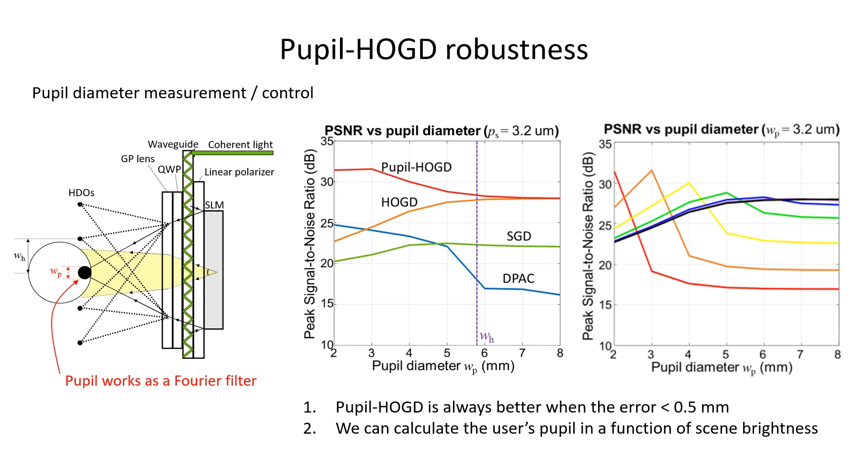Further, the pupillary light reflex is a function of the intensity of the light that falls on the retina. Therefore, we can pre-calibrate the user's pupillary light reflex and use that information to calculate the user's pupil based on the scene brightness. Especially because the pupil HOGD algorithm is quite robust to the error, we can directly use this calculated pupil diameter for the phase generation without worrying too much about image degradation.